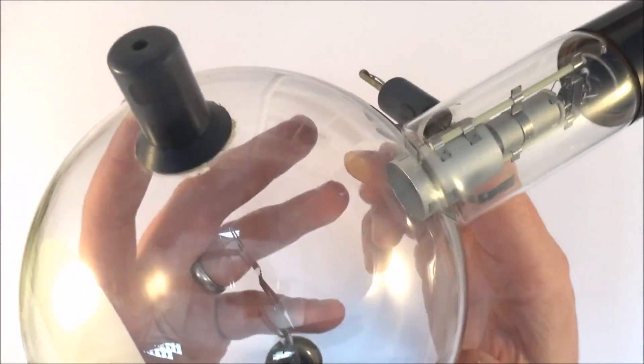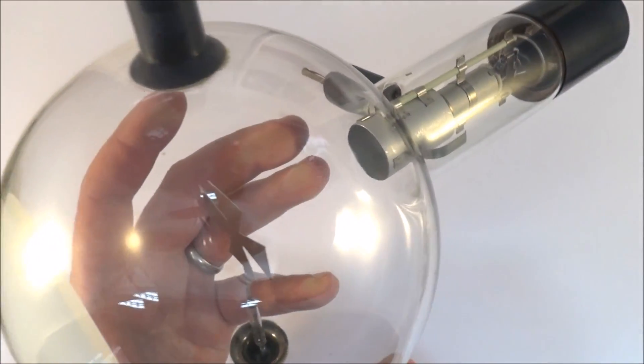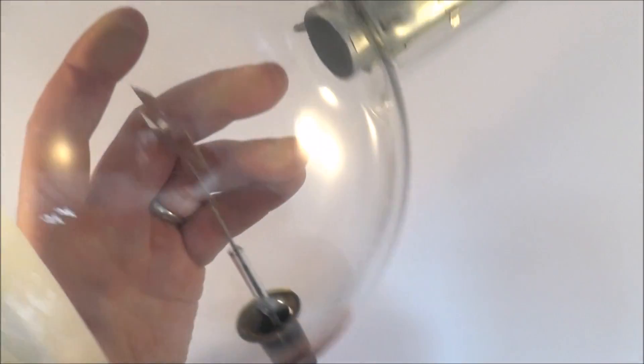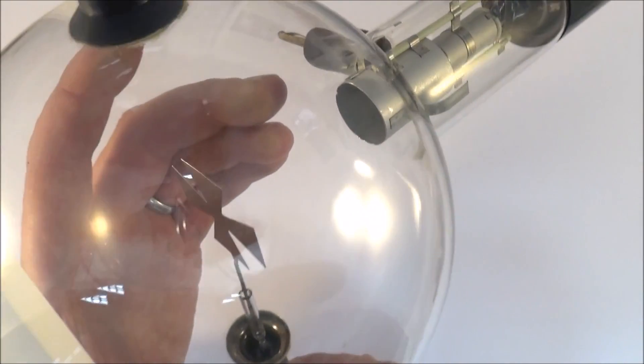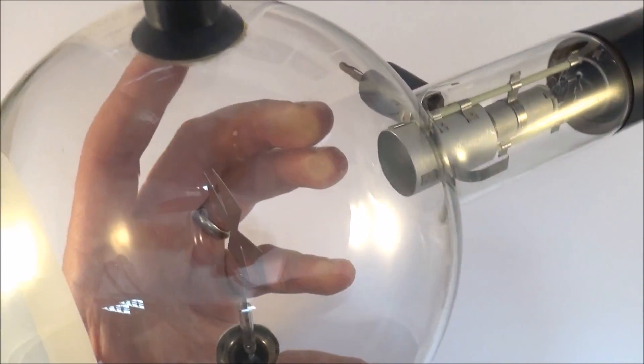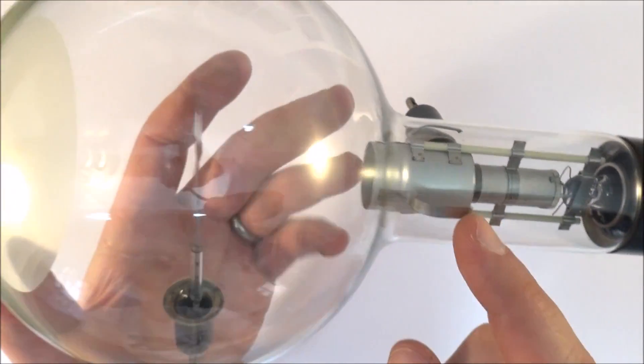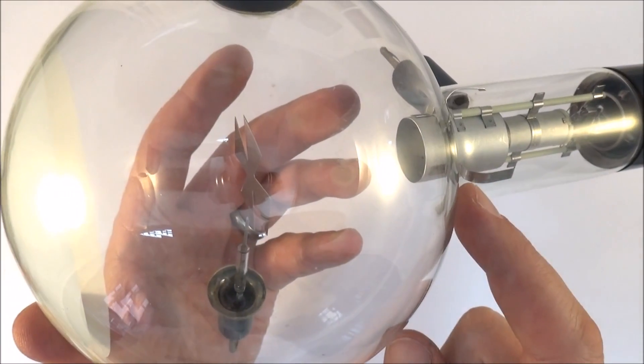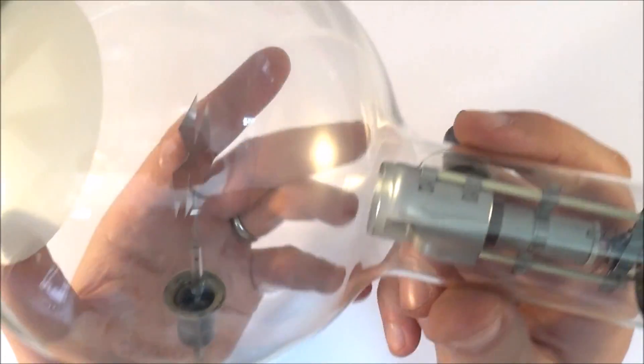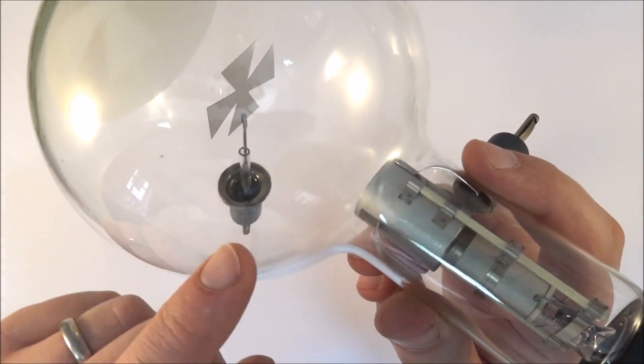This Maltese cross is generally used by earthing the cross here using the connector at the bottom over here and then you can also make that into the anode. What we then have is charged particles, in this case electrons which are negatively charged. As they are accelerated towards this cross a lot of the electrons hit it.